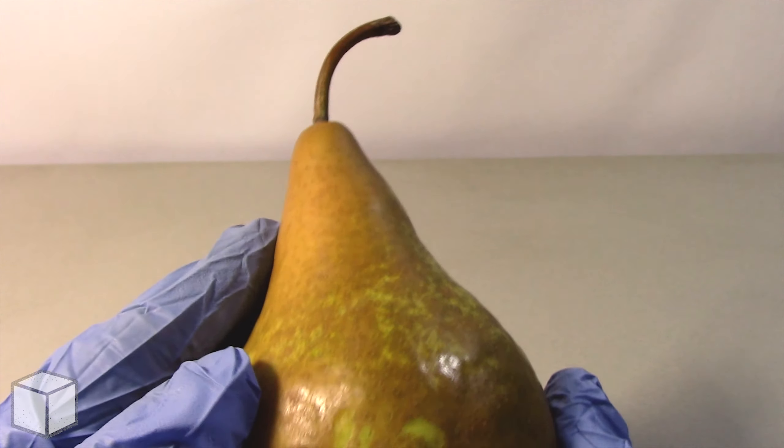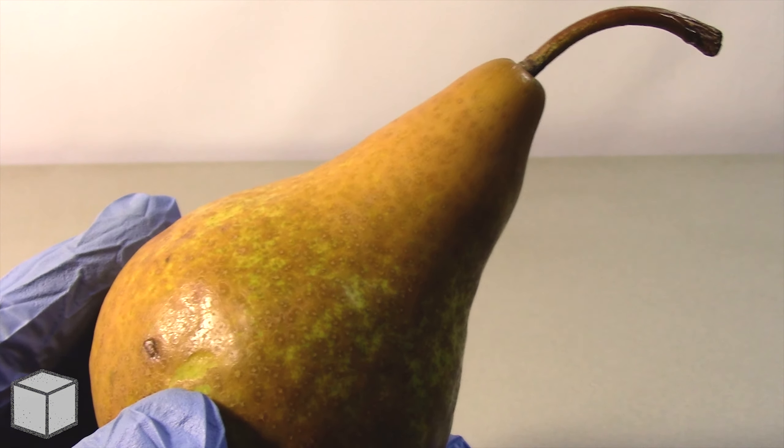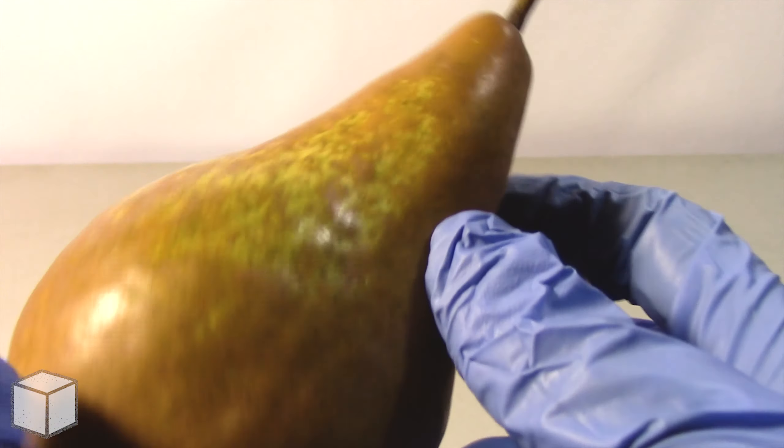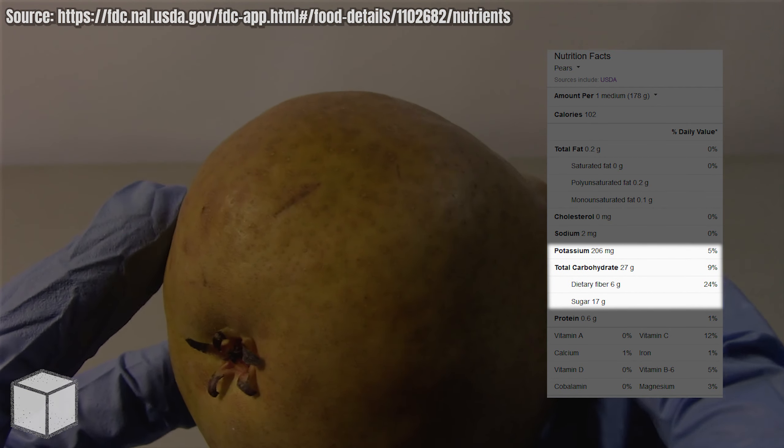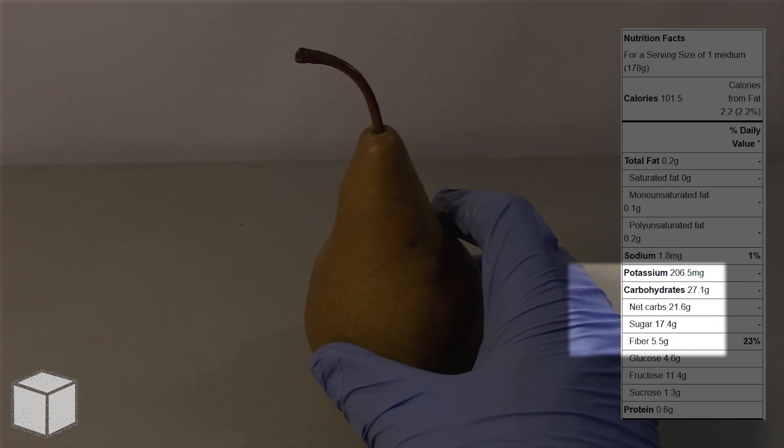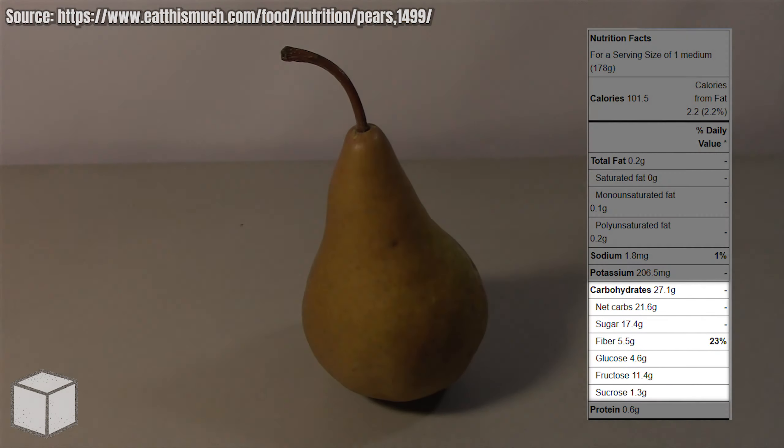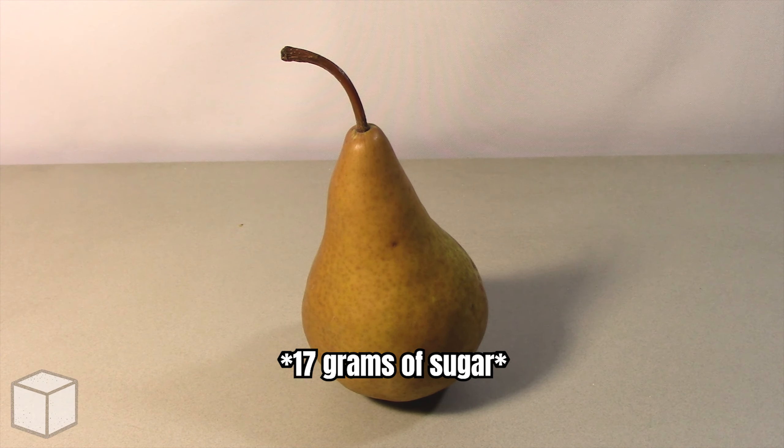Of course fruits don't have a nutrition label on them but with a quick internet search you can easily discover the estimated sugar content. As you can see highlighted from these two sources, this medium sized pear could have somewhere around 17 grams of natural sugar.